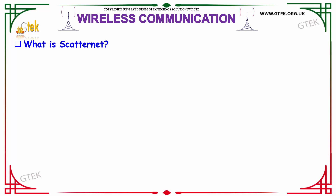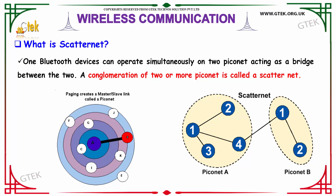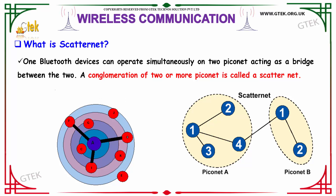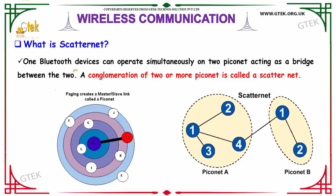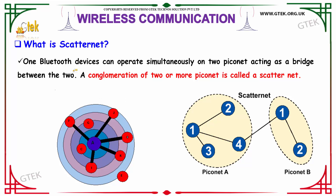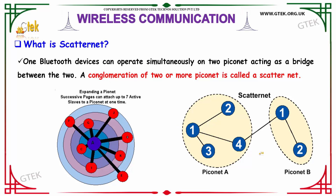The next question is: what is Scatternet? Scatternet is nothing but a kind of Bluetooth device proclamation. One Bluetooth device can operate simultaneously on two Piconets, acting as a bridge between the two. A conglomeration of two or more Piconets is said to be called as Scatternet. You can see here the depiction of Scatternet along with Piconets.